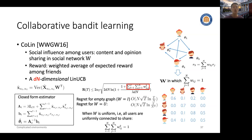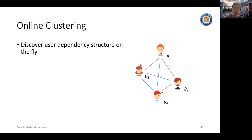We have introduced two algorithms that leverage existing user dependency structures and enjoy regret reductions when this structure exists. However, a major limitation is they assume the user dependency structure is given as input to the algorithm ahead of time. In many real-world problems, this dependency structure is unknown to the bandit algorithm, which motivates the second type of research in collaborative bandit learning: discovering user dependency structure on the fly via online clustering techniques.